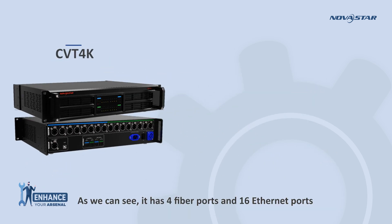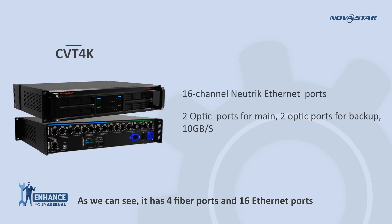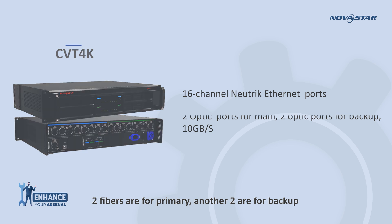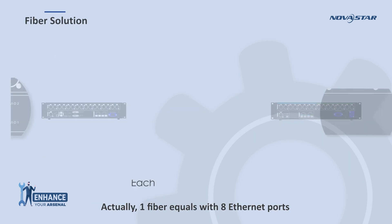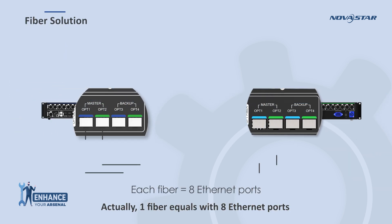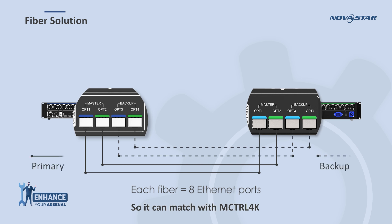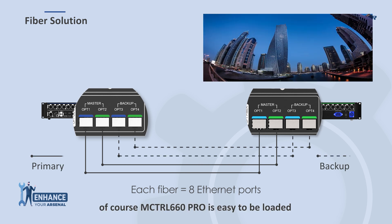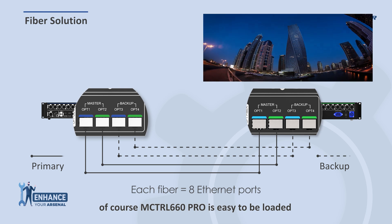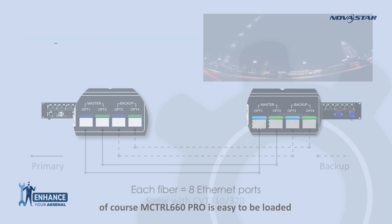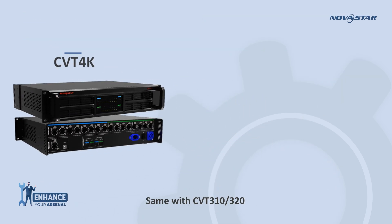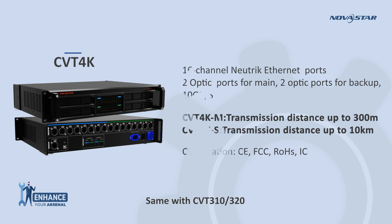CVT4K is prepared for this. It has four fiber ports and 16 Ethernet ports. Two fibers are for primary and another two are for backup. One fiber equals eight Ethernet ports, so it can match with the MCtrl 4K. Of course, MCtrl 660 Pro can also be loaded the same way with CVT310 or CVT320.